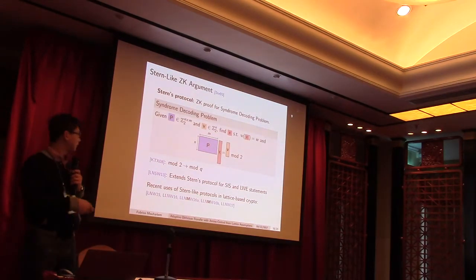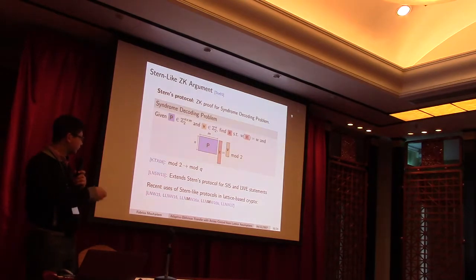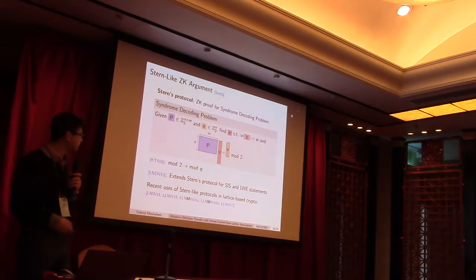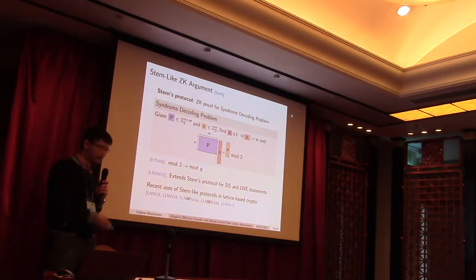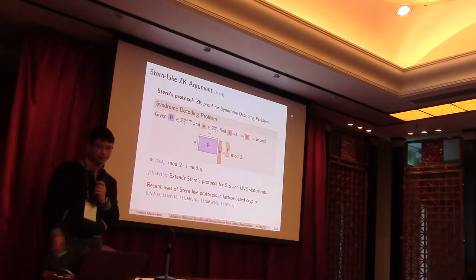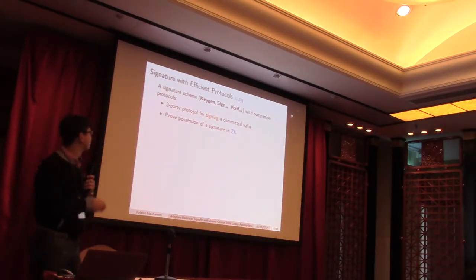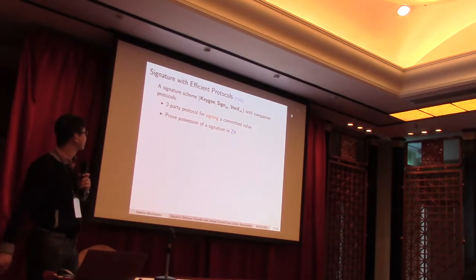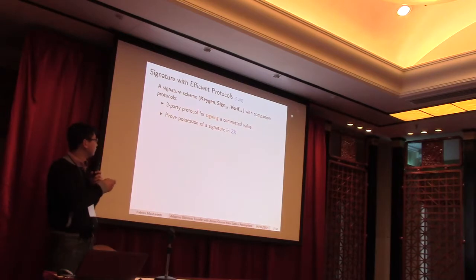And for the past two years, many works have been done to improve the expressivity of Stern-like zero-knowledge arguments, and use them in different protocols. So, one of these works leads to a signature scheme with companion protocols, which is basically a signature scheme with two companion protocols, which are, first of all, a two-party protocol, which allows to sign on the committed value at the end of the protocol.